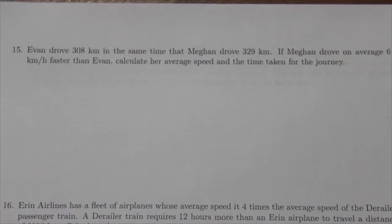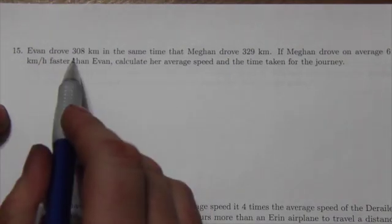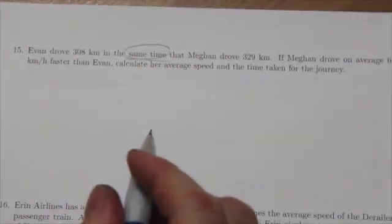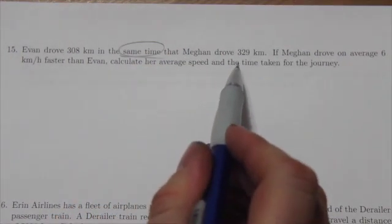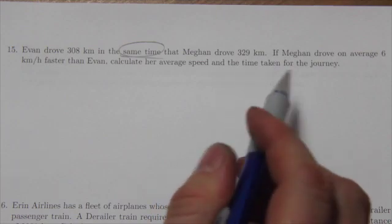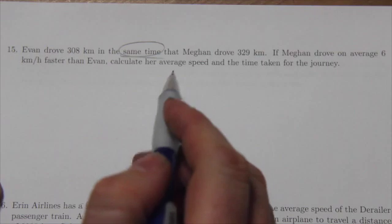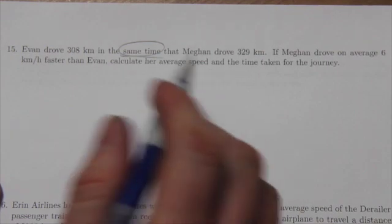Okay, word problems. Evan drove 308 kilometers in the same time - that means something important here - in the same time that Megan drove 329 kilometers. If Megan drove an average of six kilometers an hour faster than Evan, calculate her average speed and time taken for the journey.